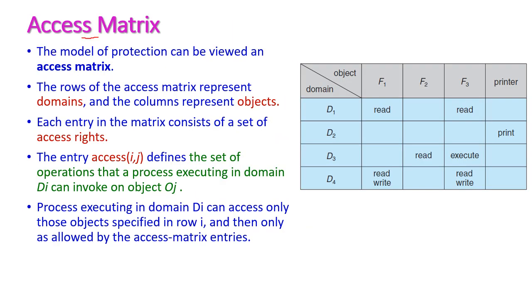What is an access matrix? The model of protection can be viewed as an access matrix in the form of a matrix where all the rows are called domains, and all the columns represent objects and their corresponding access rights.